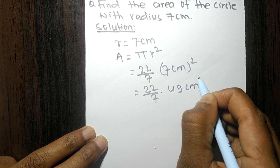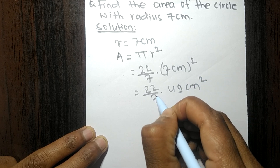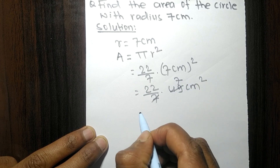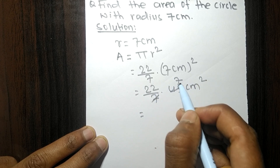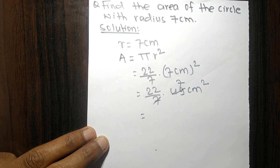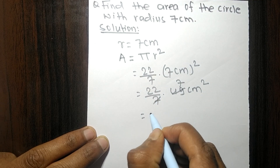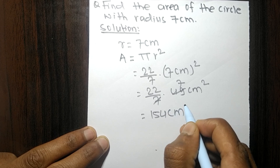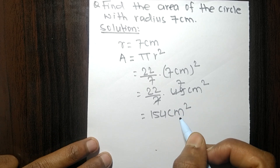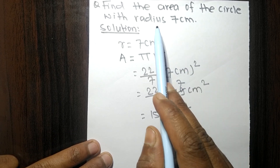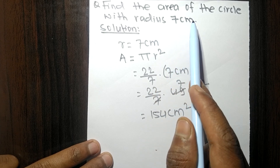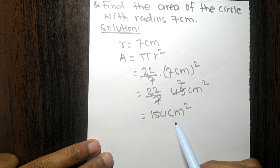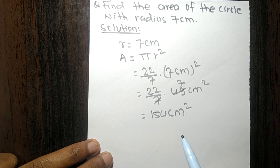So 7 times 7 means 49 centimeters squared. Now 22 times 7 means 154. So the area of a circle with a radius of 7 centimeters is 154 centimeters squared.